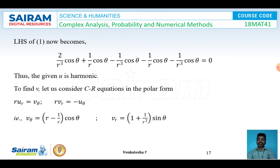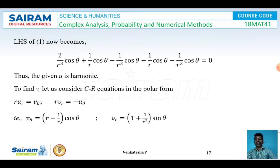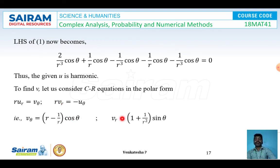To find the harmonic conjugate, we use polar CR equations: r·u_r = v_θ and r·v_r = −u_θ. Substituting the computed values, we get: v_θ = (r − 1/r)cos θ and v_r = (1/r)(1 + 1/r²)sin θ.